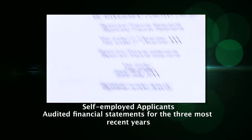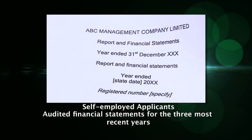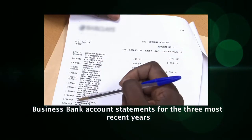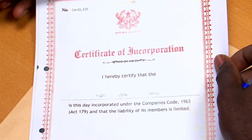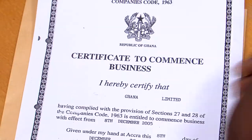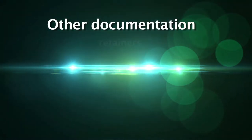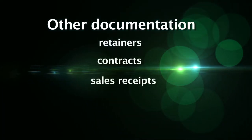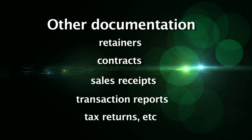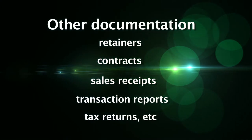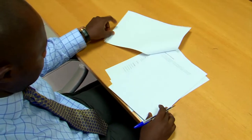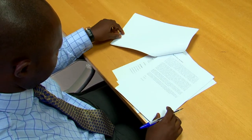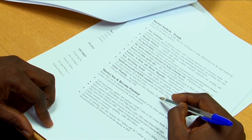Self-employed applicants must provide: audited financial statements for the three most recent years, business bank account statements for the three most recent years, a certificate of incorporation, a certificate to commence business, and any other documentation such as retainers, contracts, sales receipts, transaction reports, tax returns, etc., that provide evidence of how much you earn. If you are unable to provide any of these, please consult your Ghana Home Loans analyst. It sometimes helps to have your personal business advisor or accountant prepare a business profile which captures all the key aspects of your business.